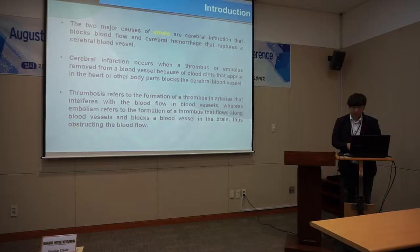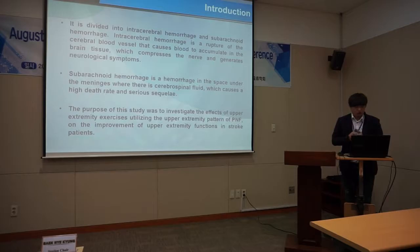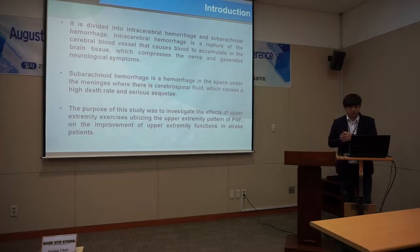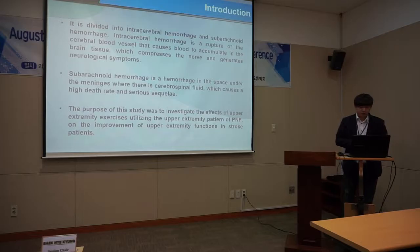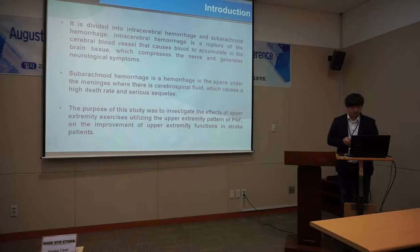Cerebral hemorrhage is divided into intracerebral hemorrhage and subarachnoid hemorrhage. Intracerebral hemorrhage is a rupture of a cerebral blood vessel that causes blood to accumulate in the brain tissue, which compresses the nerves and generates neurological symptoms. Subarachnoid hemorrhage occurs in the subarachnoid space, where a cerebral aneurysm may be involved, causing a high death rate and serious complications.